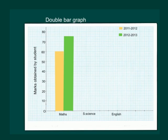If we depict yellow bar meaning the marks obtained in 2011-2012, from the graph we can see that in maths in the year 2011-2012 the child scored 60 percent marks, while in the year 2012-2013 he scored 75 percent marks.